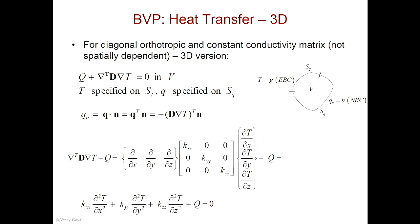Now, if I wanted to expand this equation to be more clear rather than matrix notation — the gradient here by definition is derivative with respect to X, derivative with respect to Y, derivative with respect to Z. But since I have gradient transpose, that column vector becomes a 1 by 3 row vector. So then I multiply that by D bold, and then I have the gradient of T. Expanding all of this, I get the partial differential equation for a 3D problem.